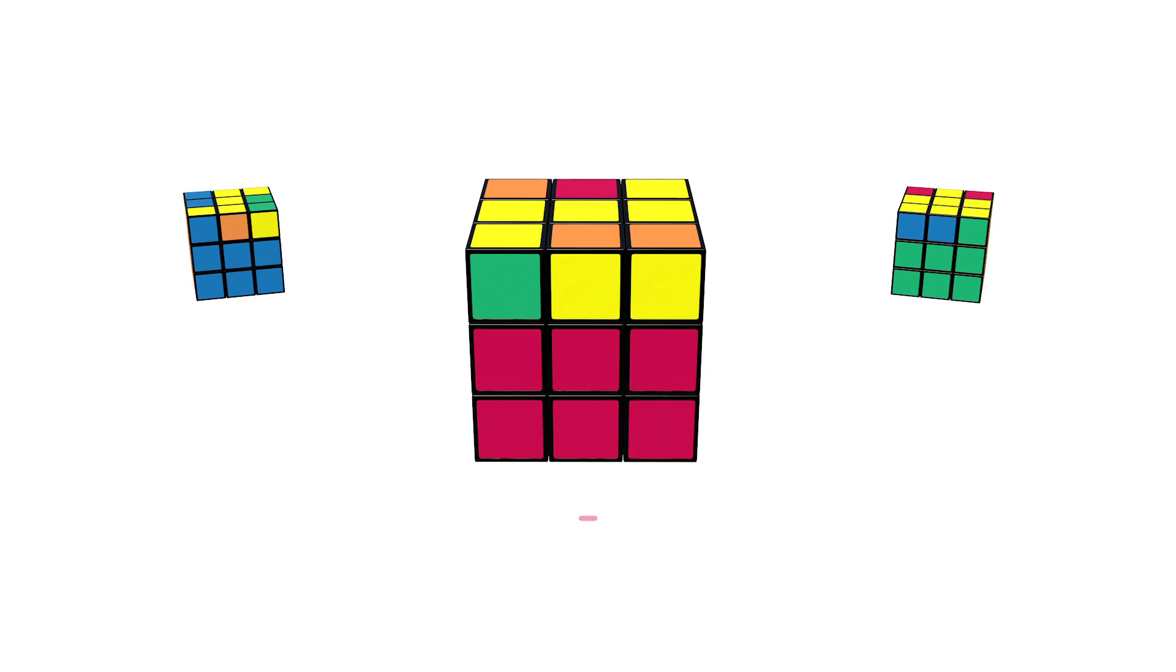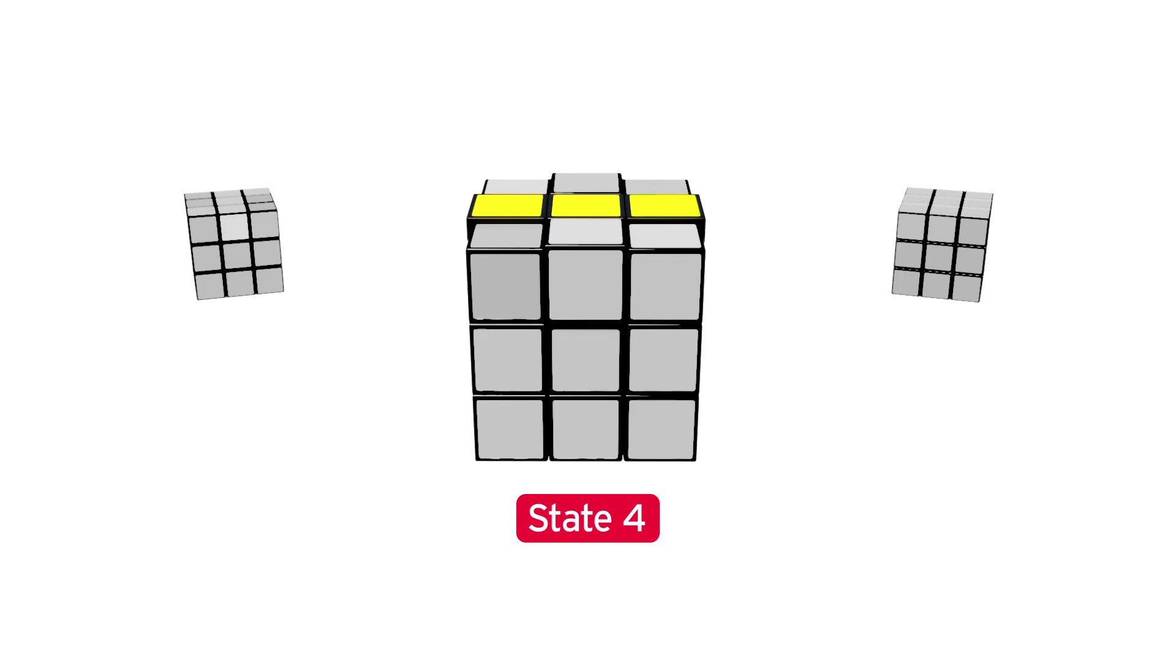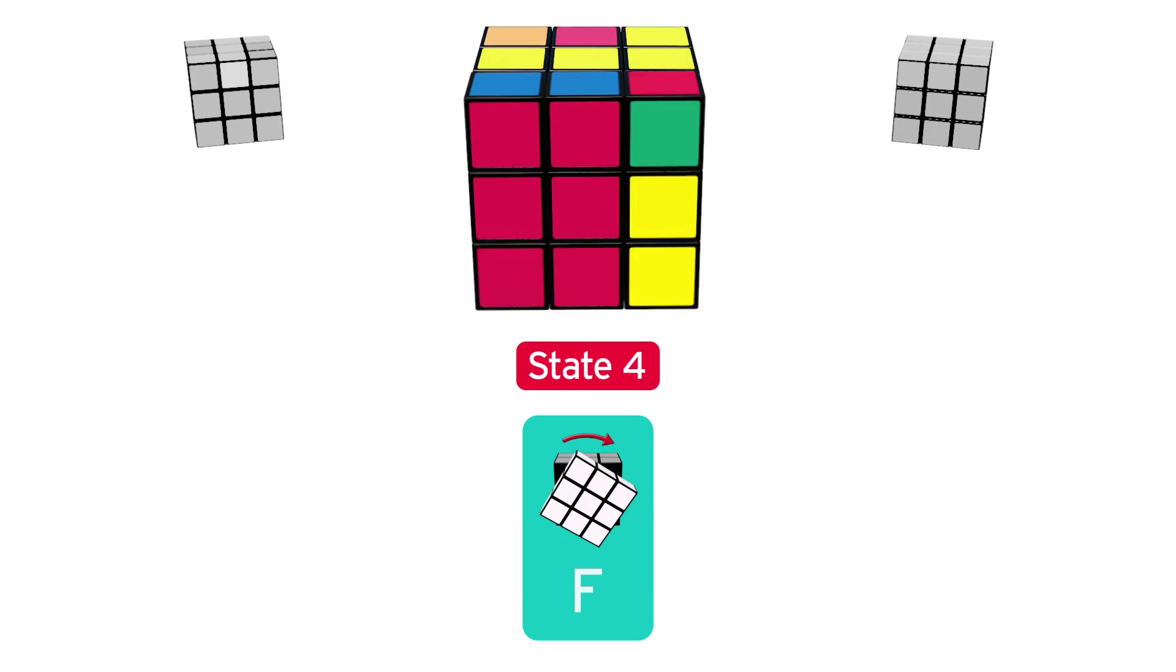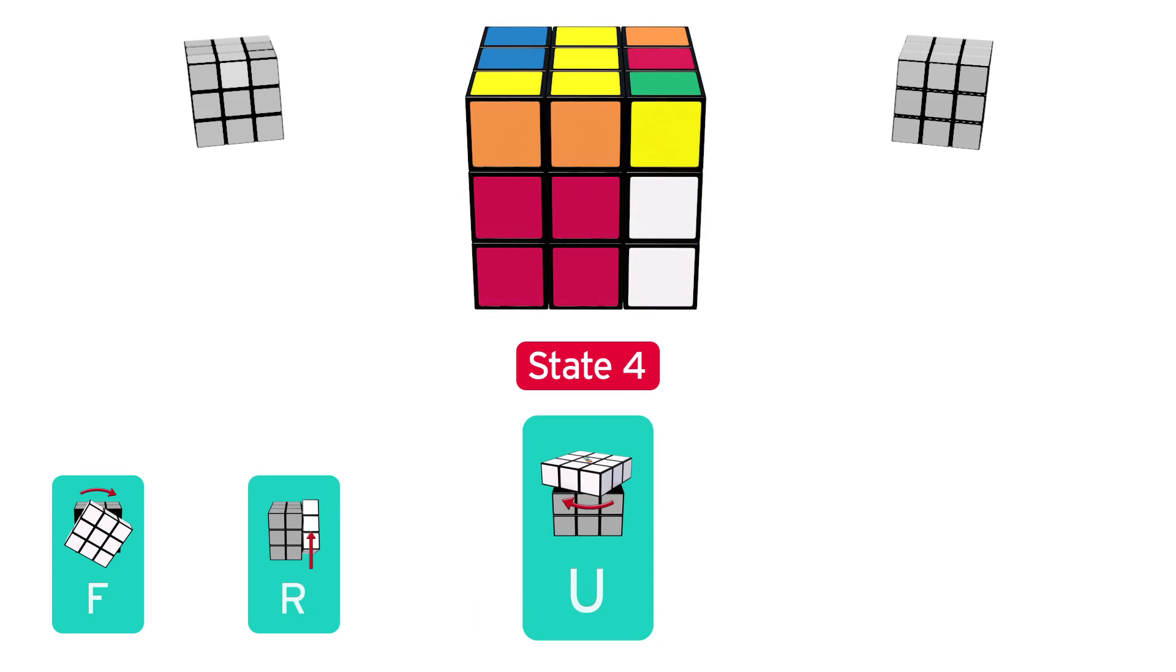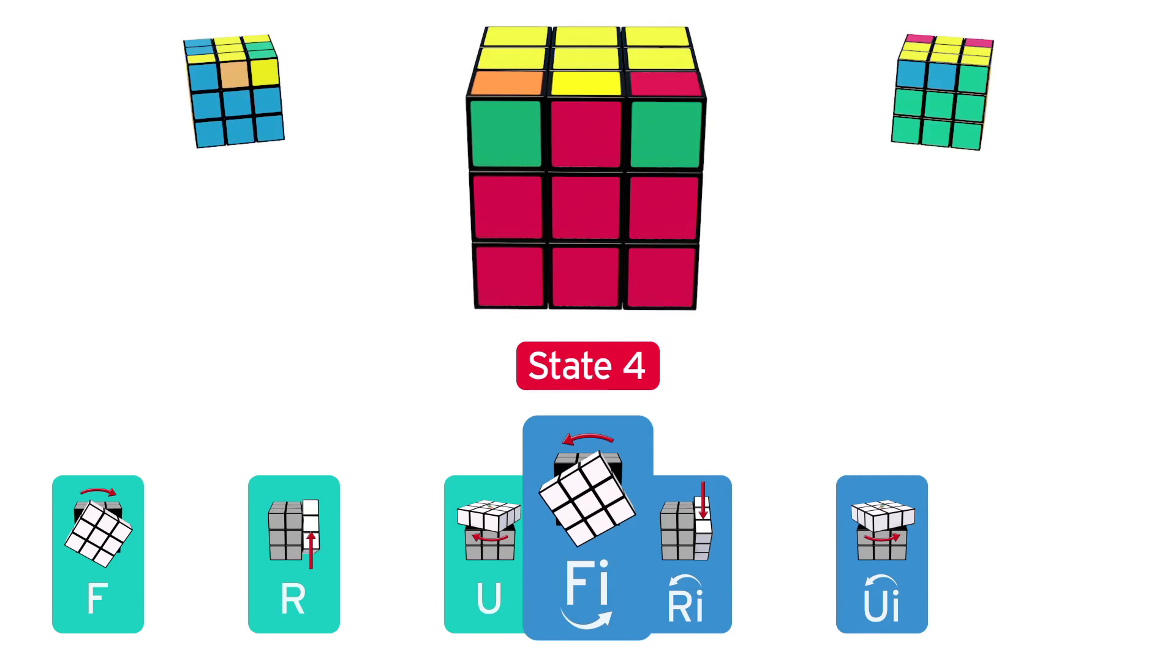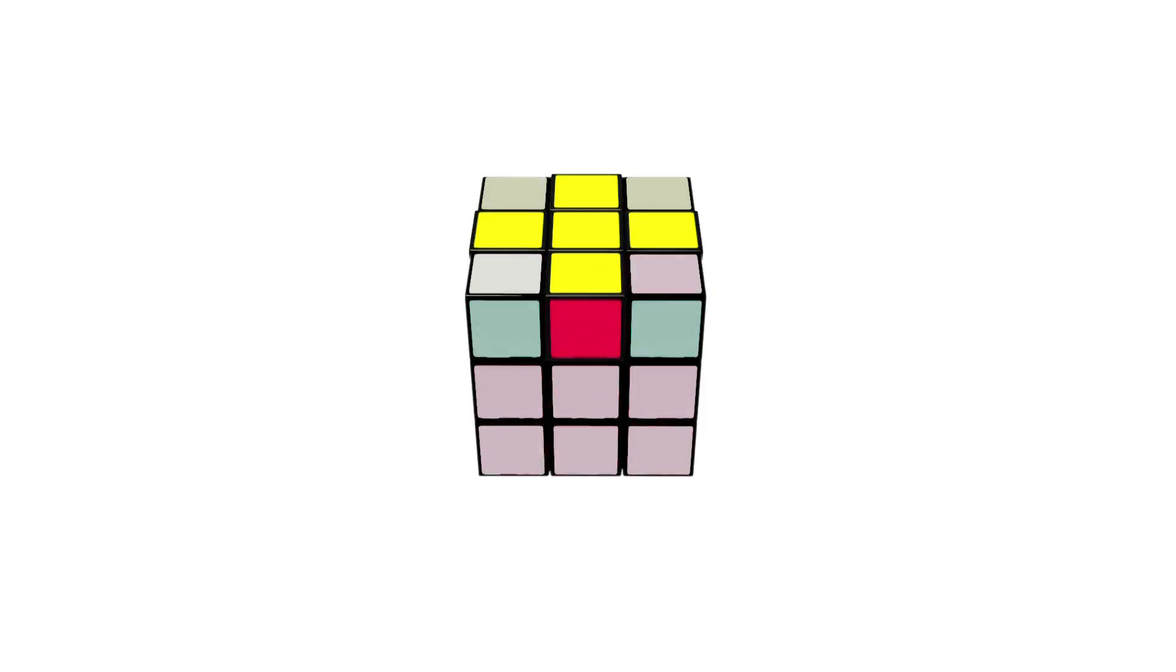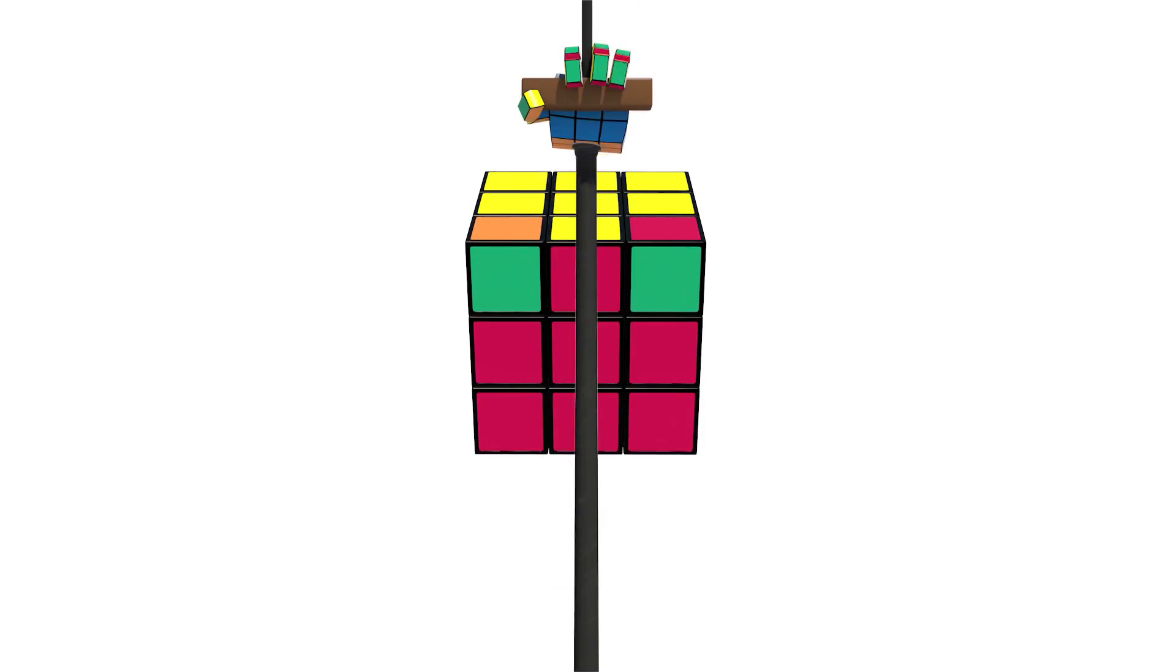Finally, if your cube is in State 4, with two yellow edge pieces forming a horizontal line, then do this: Front, Right, Up, Right inverted, Up inverted, Front inverted. Now you should have a yellow cross. You do! Way to go, guys! Let's move on!